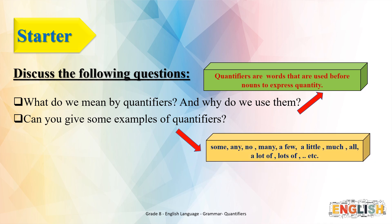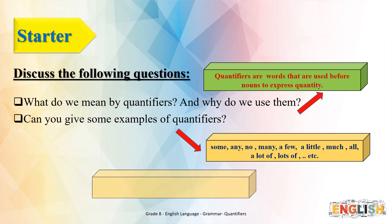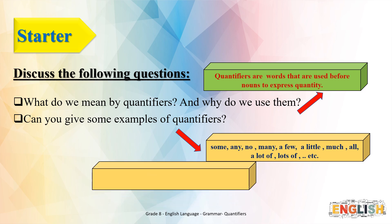Examples of quantifiers include: some, any, no, many, a few, a little, much, all, a lot of, lots of, etc. We can put them in sentences as well. For example: 'I need some apples.' And 'I need only a little sugar in my coffee.'